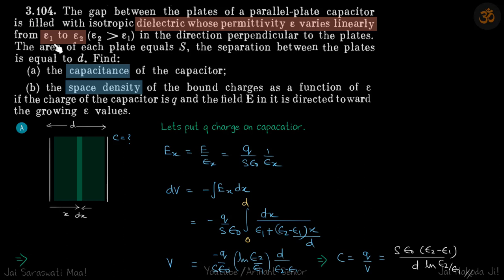We are given a dielectric whose permittivity varies linearly from epsilon 1 to epsilon 2, and we need to find the capacitance and the space density of the bound charges within that capacitor. Whenever we need to find capacitance, we put a test charge q and minus q on the two plates, find the electric field at a general point in between, do e dot dr to get the potential difference, and divide by q to get the capacitance. Let's put plus q here and minus q here.